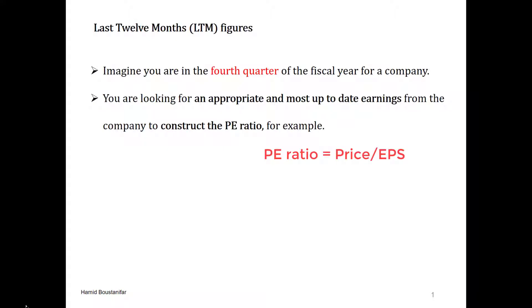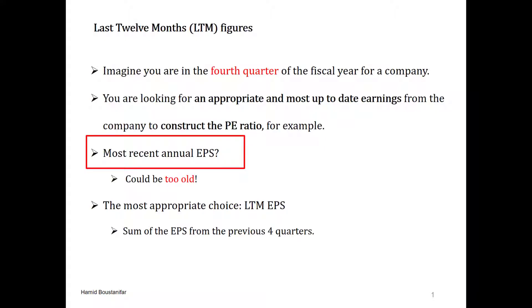Ideally, we would have loved to have earnings exactly for the past 365 days, which is one whole year. However, earnings are accounting numbers that are not available in daily or weekly frequencies. Instead, earnings are reported in companies' accounting statements, which are typically either at yearly or quarterly frequencies. Given that we do not have the ideal earnings, what we should be looking for is an appropriate, reliable, and most up-to-date number related to the earnings of the company. The most straightforward way is to go to the most recent annual filing and get the earnings per share from there to be used in the denominator of your PE ratio. The problem with this is that the number could be too old.